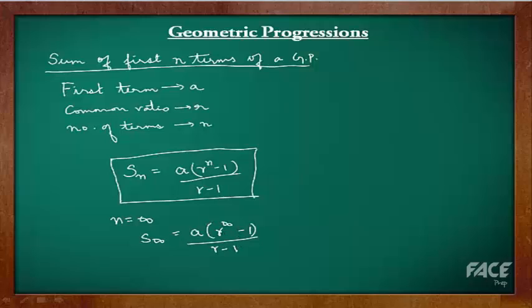Now, since R is a value less than 1, R power n infinity will tend to 0. Hence, the sum of terms of infinitely long decreasing series is S infinity equals A divided by 1 minus R. The reason being R is lesser than 1.